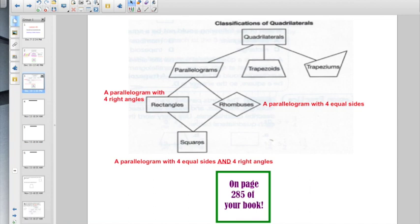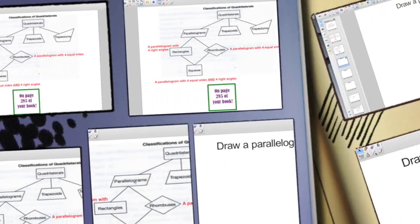Now, here's the goofy thing. A square, if you follow the lines up, could also be a rhombus. It can also be a rectangle. And it can also be a parallelogram. And for sure, they're all types of quadrilaterals. So, a square would actually have four technical names because it has four equal sides. It has four right angles, and it has two pairs of parallel sides.